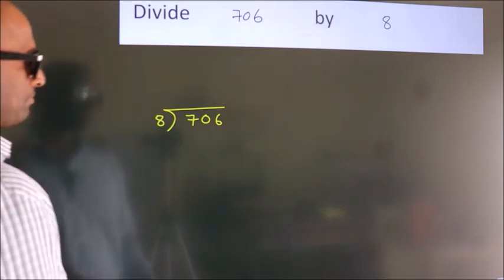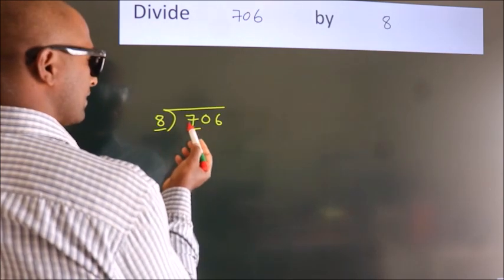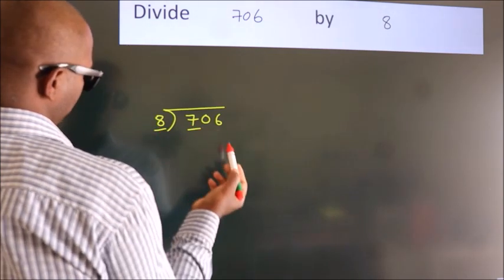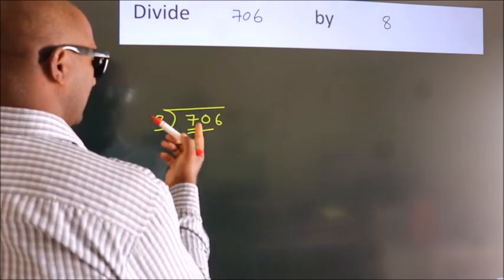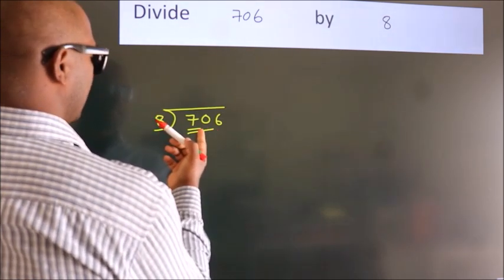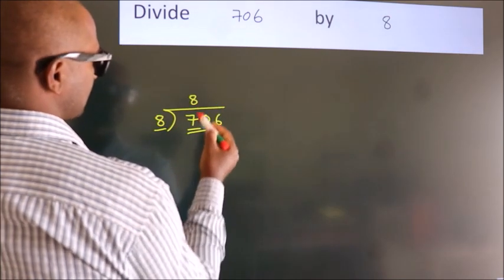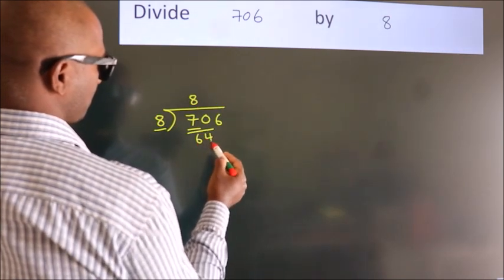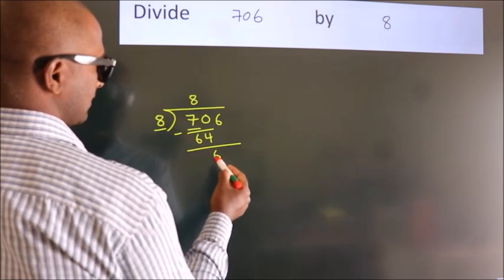Next, here we have 7, here 8. 7 smaller than 8, so we should take two numbers. 70. A number close to 70 in 8 table is 8 8 64. Now, we should subtract. We get 6.